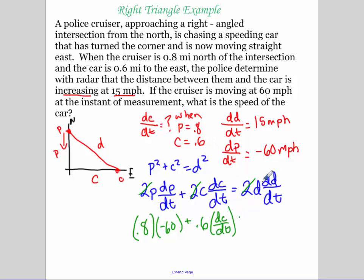The distance, so the distance that's between them, use this P squared plus C squared equals d squared, and that's going to end up being 1. And dd/dt is equal to 15. Now it's just a matter of solving for this dC/dt. I have negative 48 plus 0.6 dC/dt equals 15.